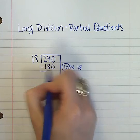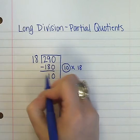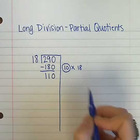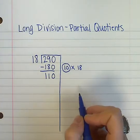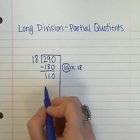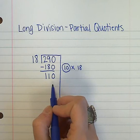If I take that off from where I started, I still have 110 of something, and I need to find out how many groups of 18 go in there. Well, I can't take out another 10 groups, because that would be taking off 180 from 110, and that's not going to work.